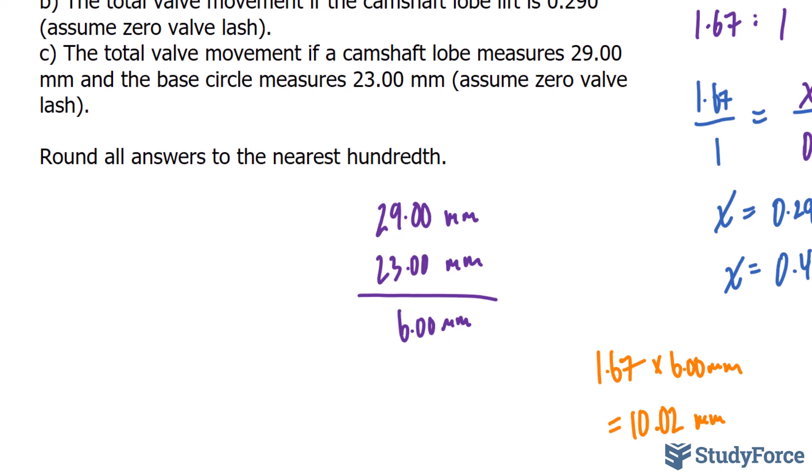So again, you could set up the proportion the same way I did in question B, or you can simply take that value and multiply it to the 1.67, which we found earlier.